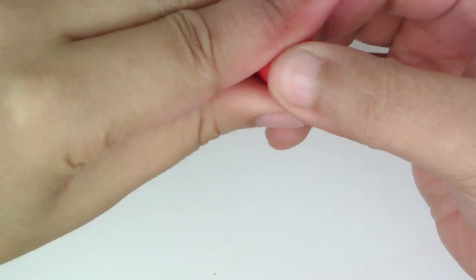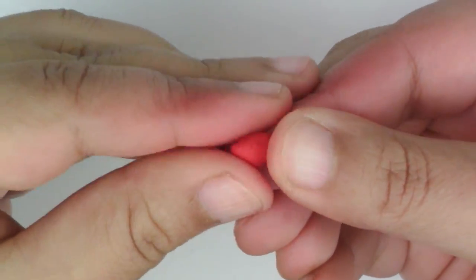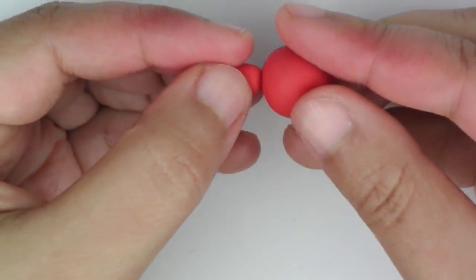For Foxy, roll a ball of red eraser clay, and lightly make the top narrower. Make the ears with a flat teardrop shape, and smooth them in.